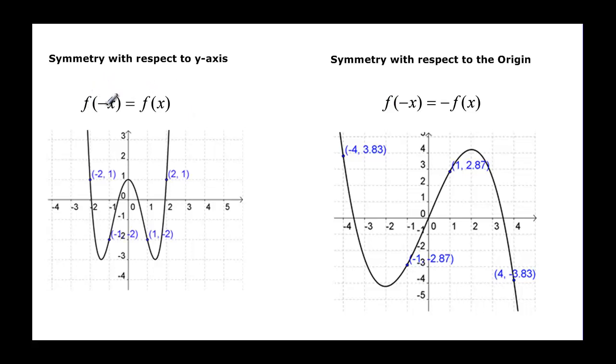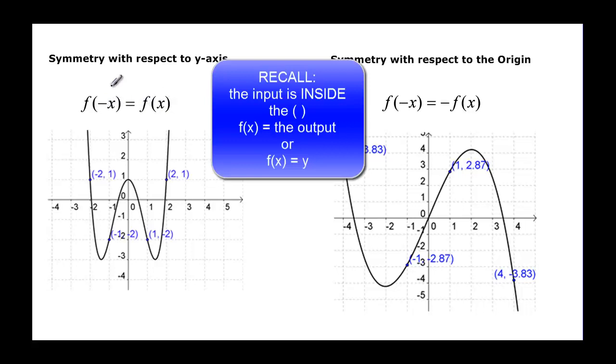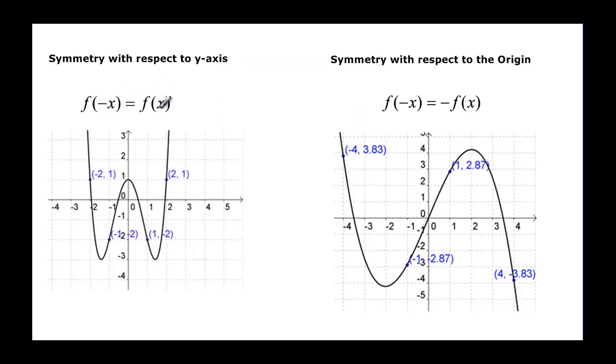So this tells us f of negative x is equal to f of x. Remember, function notation really means this is my input and my output is the f of x. So this is really saying I put a negative x in and I should get the same answer as if I had put a positive x in. What does that really mean? It means if I had xy, then if I put a negative x in for the input, I should get that same output, that same y value.